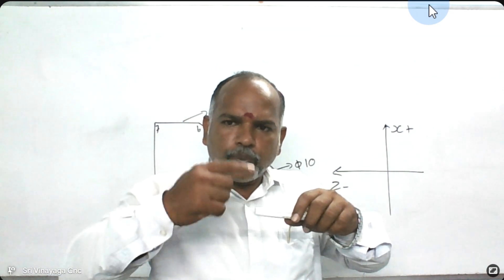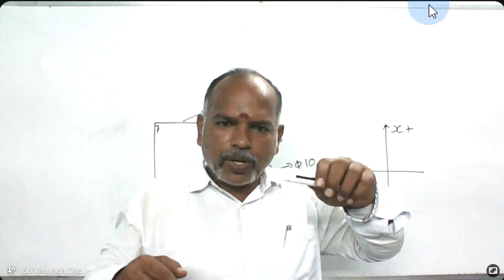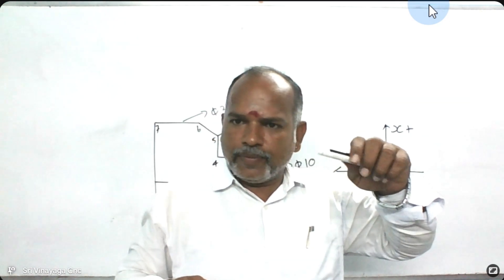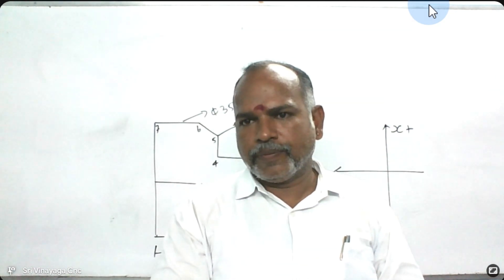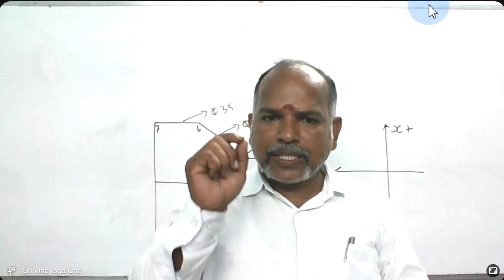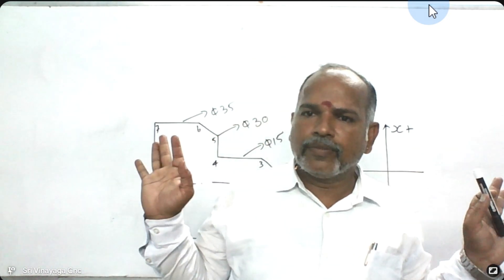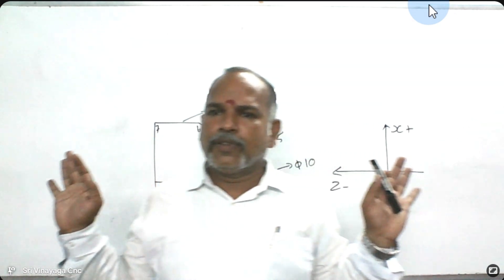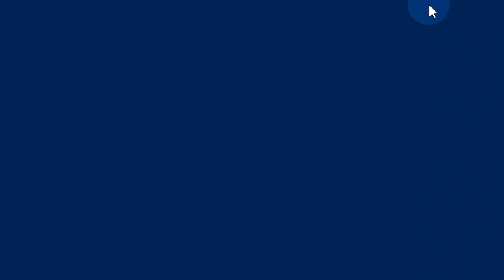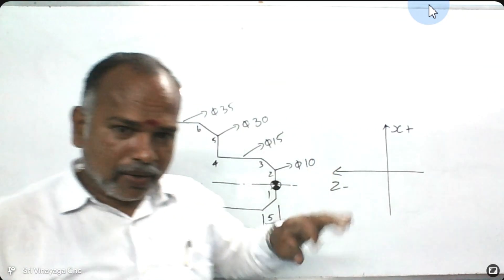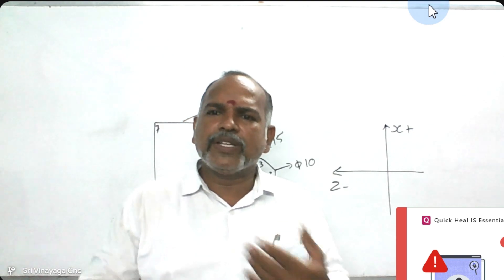When the program is running, if you see the program — when we start the program, the job will be rotating, so the full area will be covered. That is why X indicates diameter and Z indicates length. If you understand X-plus and Z-minus, you can do the program easily.